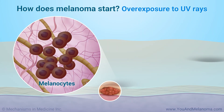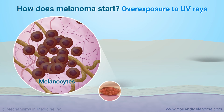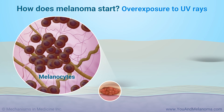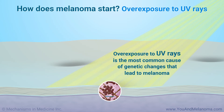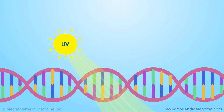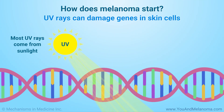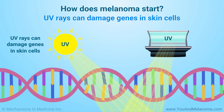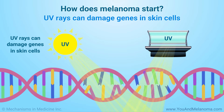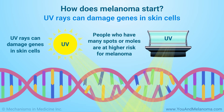Melanoma in the skin starts when certain skin cells change and start to grow and divide uncontrollably. Overexposure to ultraviolet, or UV, rays is the most common cause of genetic changes that lead to melanoma in the skin. Most UV rays come from sunlight, but they may also come from tanning beds. Tanned skin is a sign of damage to skin cells. UV rays can damage the genes in skin cells, and these changes may occur over many years before they turn into melanoma. People who have many spots or moles on their skin are at higher risk for melanoma.